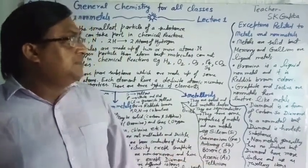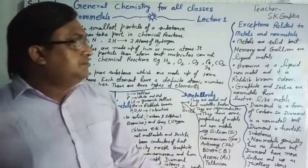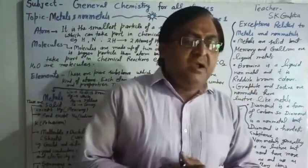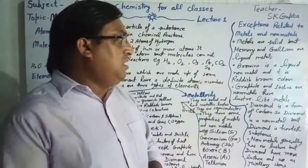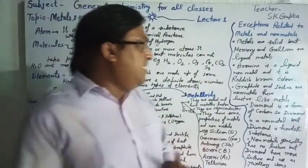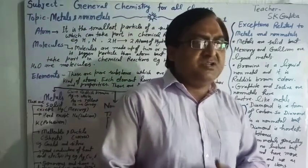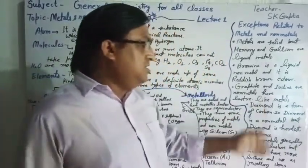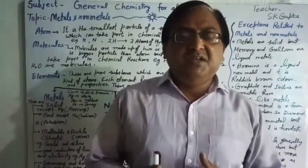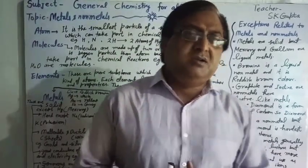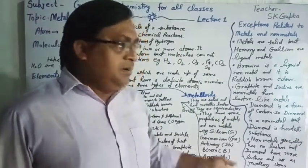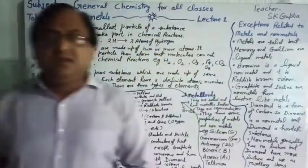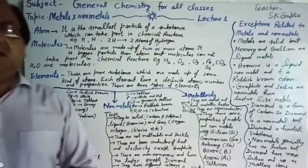These are some exceptions you can see here: mercury and gallium are liquid metals. Bromine is a liquid non-metal. Graphite and iodine are non-metals but have luster. Diamond is a non-metal but is a very hard substance and has bright luster. Dear students, you have to listen very carefully and learn it properly. Thank you very much.